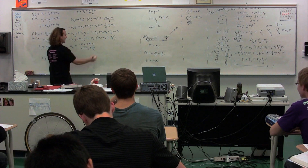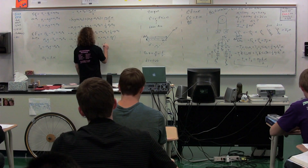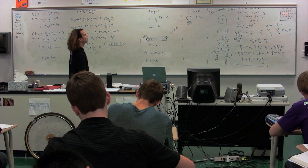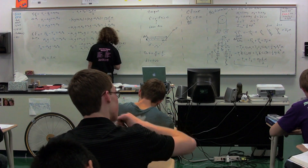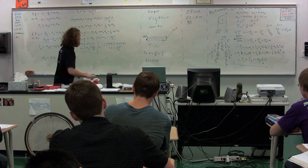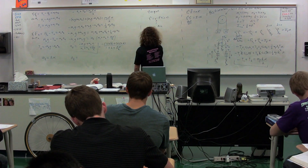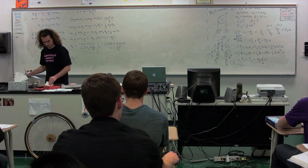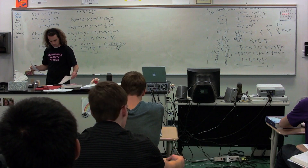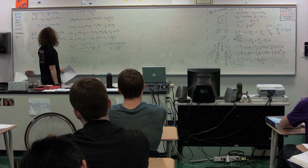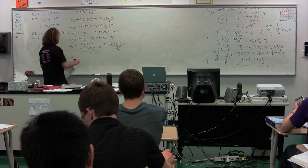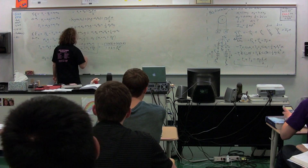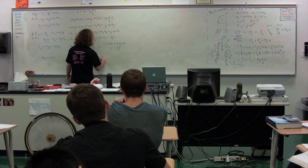We actually know all of this. Plugging in numbers: negative 1 times 9.8 plus 2 times 9.8 in the numerator, divided by 1 plus 2 plus 0.5 divided by 2 in the denominator. That gives an acceleration of approximately 3.02 meters per second squared.